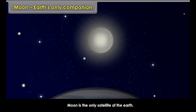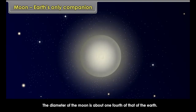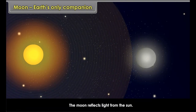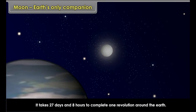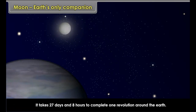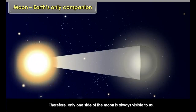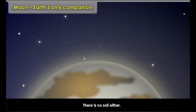The Moon is the only satellite of the Earth. The diameter of the Moon is about one-fourth of that of the Earth. The Moon appears big compared to other heavenly bodies because of its relative closeness to the Earth. The Moon reflects light from the Sun. It rotates on an axis and revolves around the Earth. It takes 27 days and 8 hours to complete one revolution around the Earth, and the time taken to complete one rotation is also the same. Therefore, only one side of the Moon is always visible to us. There is no atmosphere or water on the Moon. The Moon's surface consists of irregular hills and basins, and there is no soil either.